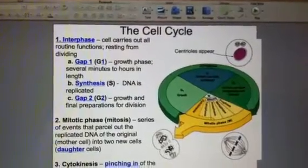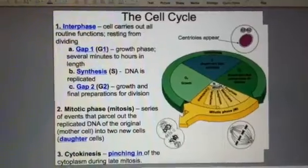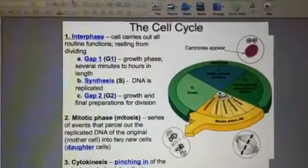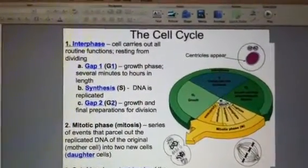The cell cycle is a series of events that takes place in a cell, leading to its division and replication that produces two daughter cells. Each of these two daughter cells is identical to the original in chromosome number.